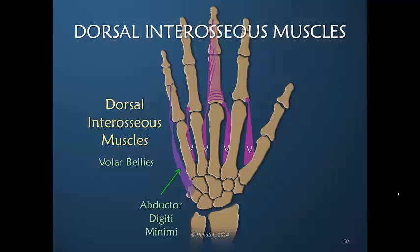The abductor digiti minimi, as we discussed, would be the structure on the little finger that assumes the same function as the volar bellies of the dorsal interosseous muscles — the pure abductors that spread the fingers apart from one another. Because there are no dorsal interosseous muscles that usually insert into the little finger.